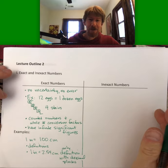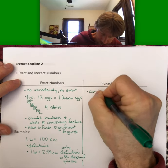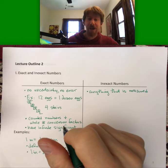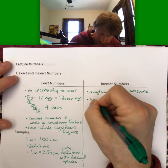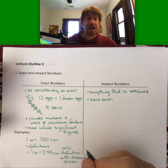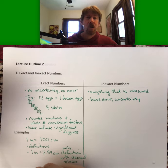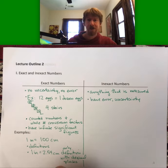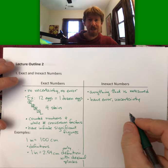Now let's talk about inexact numbers. The short and sweet version is that inexact numbers are anything that is measured. We'll do a lot of measurements. Inexact numbers do have error, and another word for error is uncertainty. The whole idea behind significant figures is to communicate, as scientists, how much error or uncertainty there is in a number.